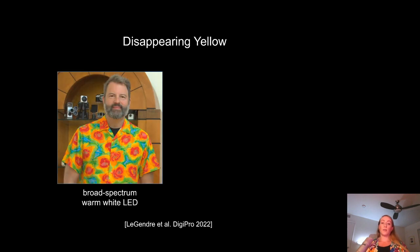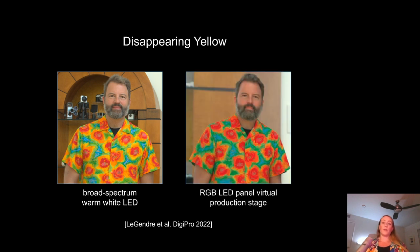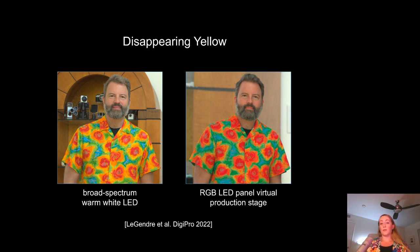The result is that yellow materials often disappear when illuminated within virtual production stages. The image on the left shows Paul in his Hawaiian shirt under a broad spectrum warm white LED. On the right, we can see the appearance of the shirt under an RGB LED virtual production stage trying to reproduce that illumination — in this case we've matched the color of the light, so the white balance is the same, but the yellow is gone.